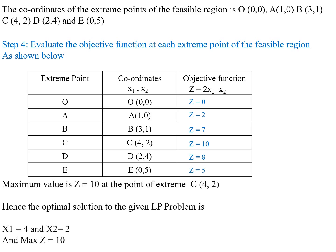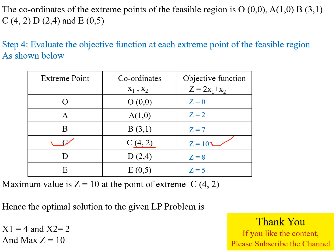Among all these values, the maximum value is 10, which corresponds to extreme point C with coordinates (4, 2). So the optimal solution for the given linear programming problem is x1 equal to 4 and x2 equal to 2, and the maximum objective function value is 10. Thank you.